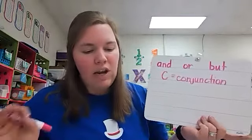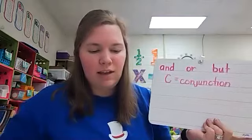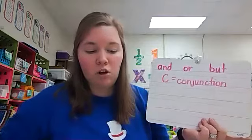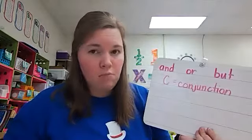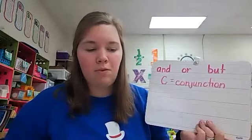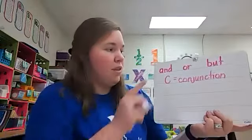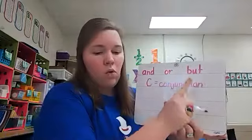So coordinate conjunctions join ideas that have the same level of importance. This means that coordinate conjunctions join two subjects, two verbs, two adverbs, or two sentences. So again, these are and, or, and but.